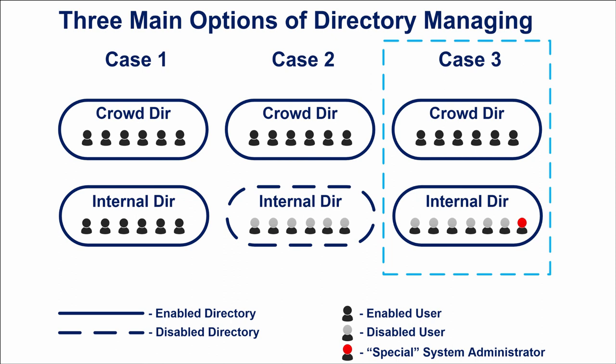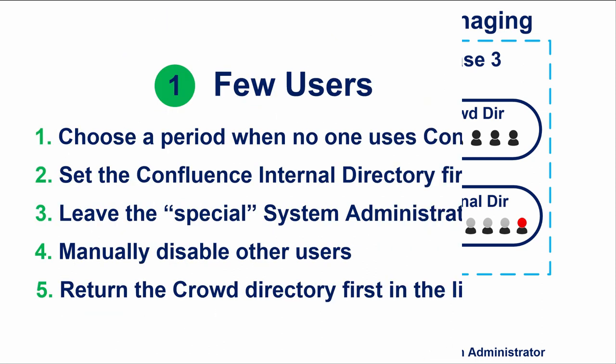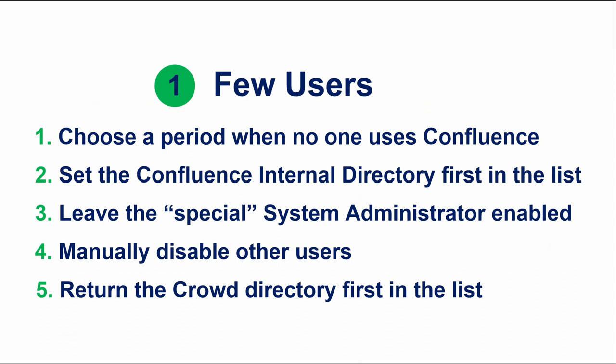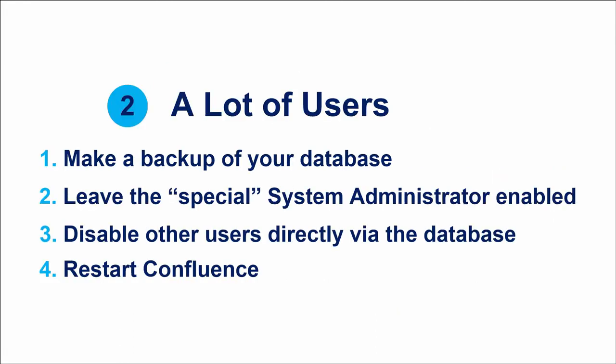There are several approaches. If you have few users, choose a period when no one is using Confluence, set the internal directory first on the list, manually disable all users except the special system administrator, and log in as that admin. After that, you can return the Crowd directory to its place. If you have many users, you can deactivate them directly by making changes to the database without changing the directory order.